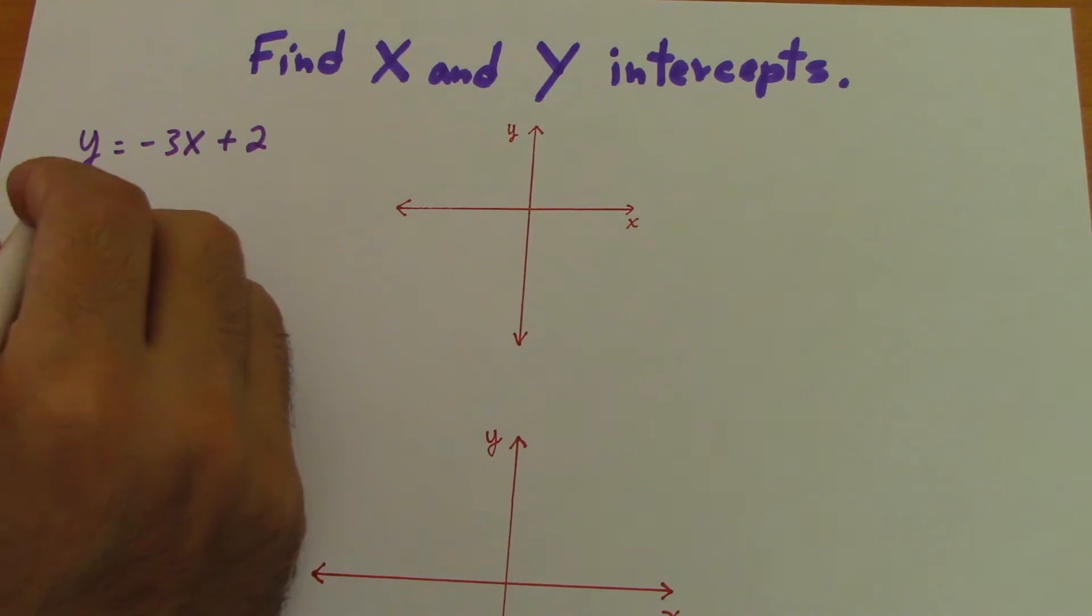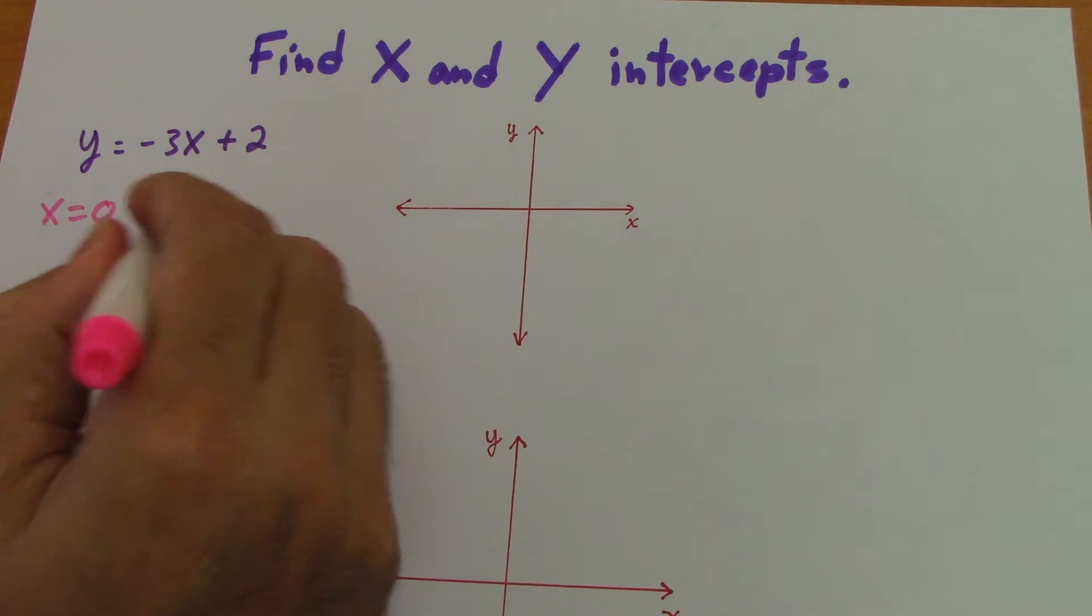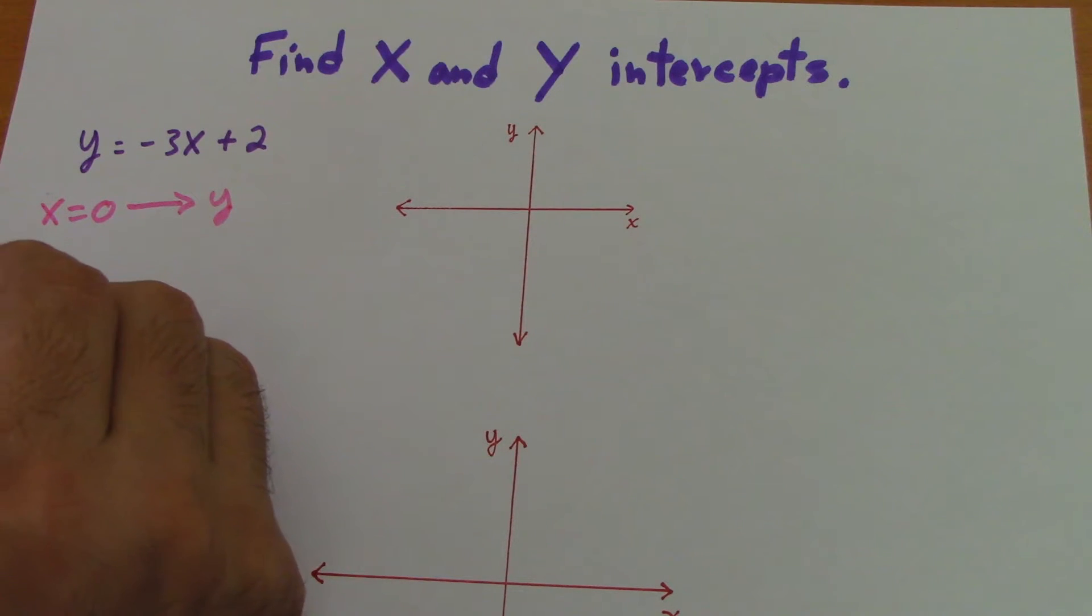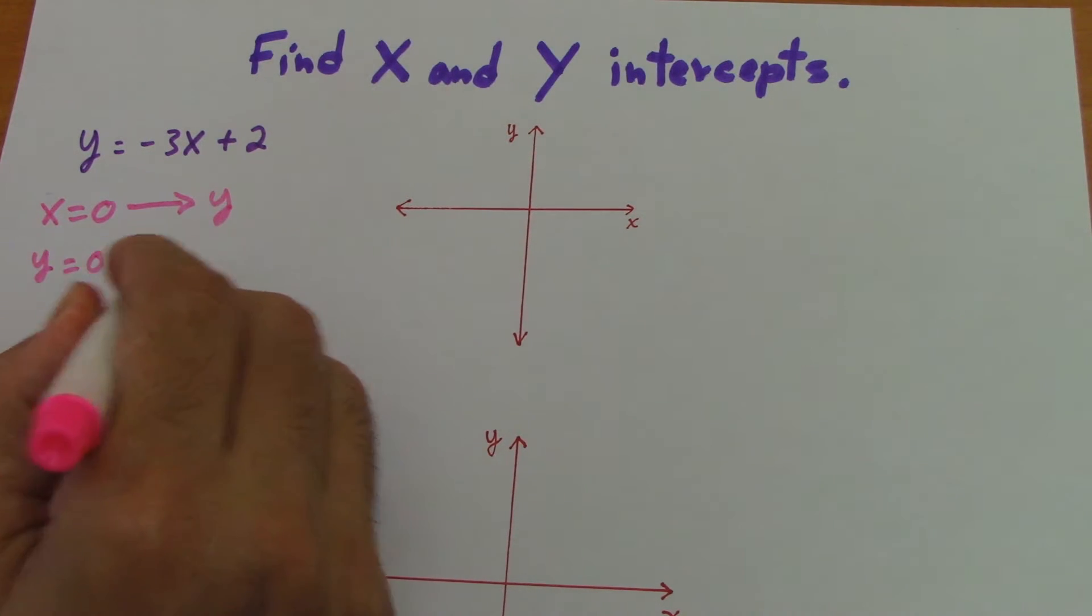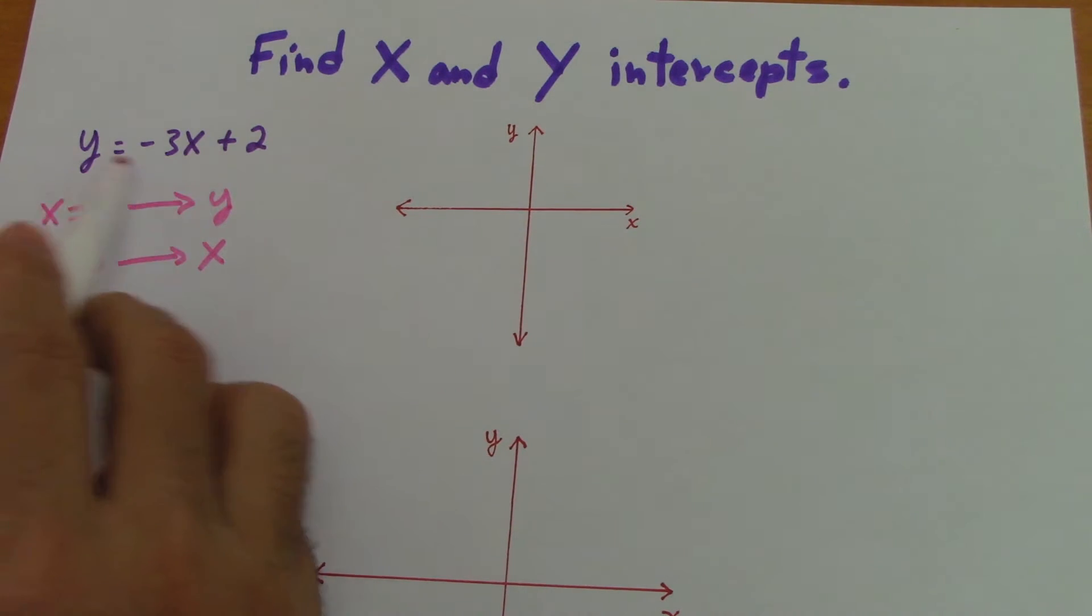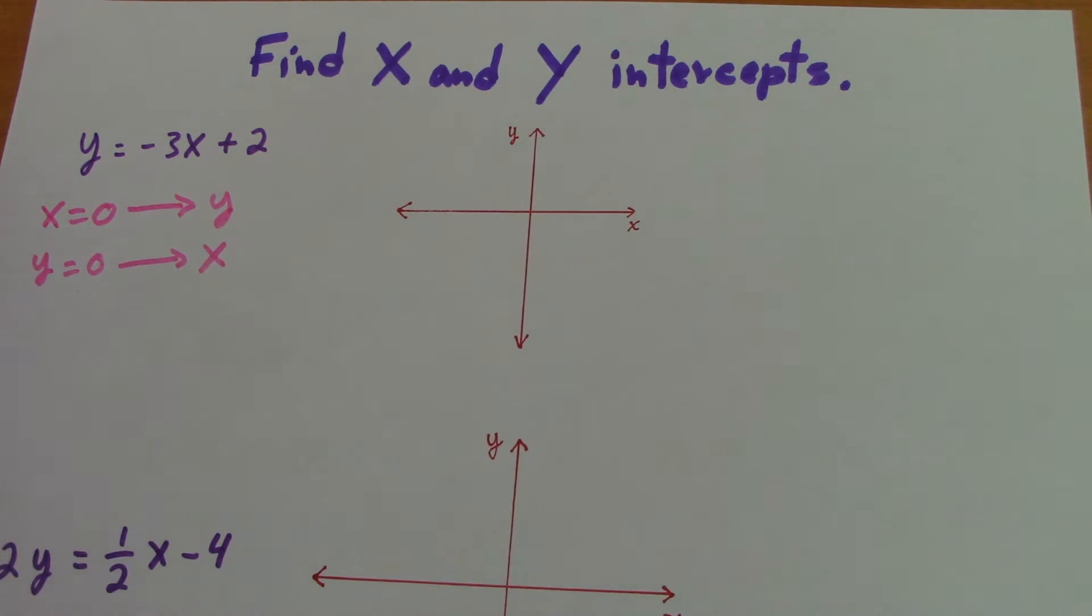So if we give, we put x equals 0, we will find the y intercept. And when we give y equals 0, we will find the x intercept. For example, let's graph this equation first and then we'll see how to do it all directly.